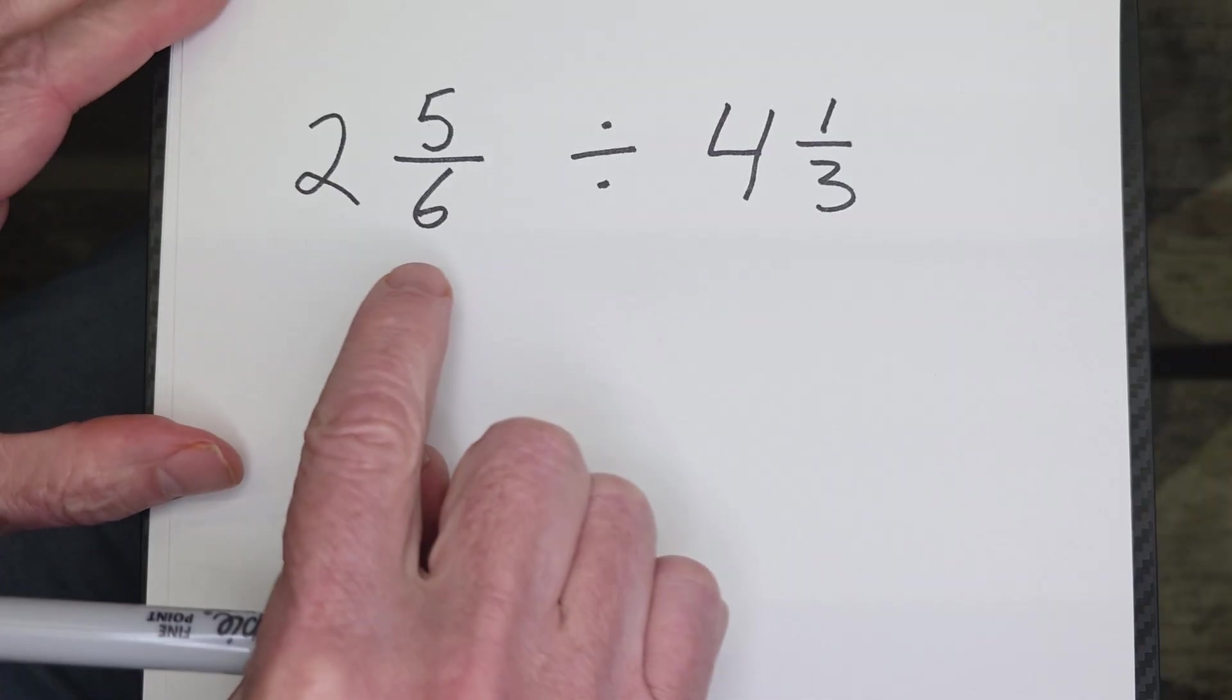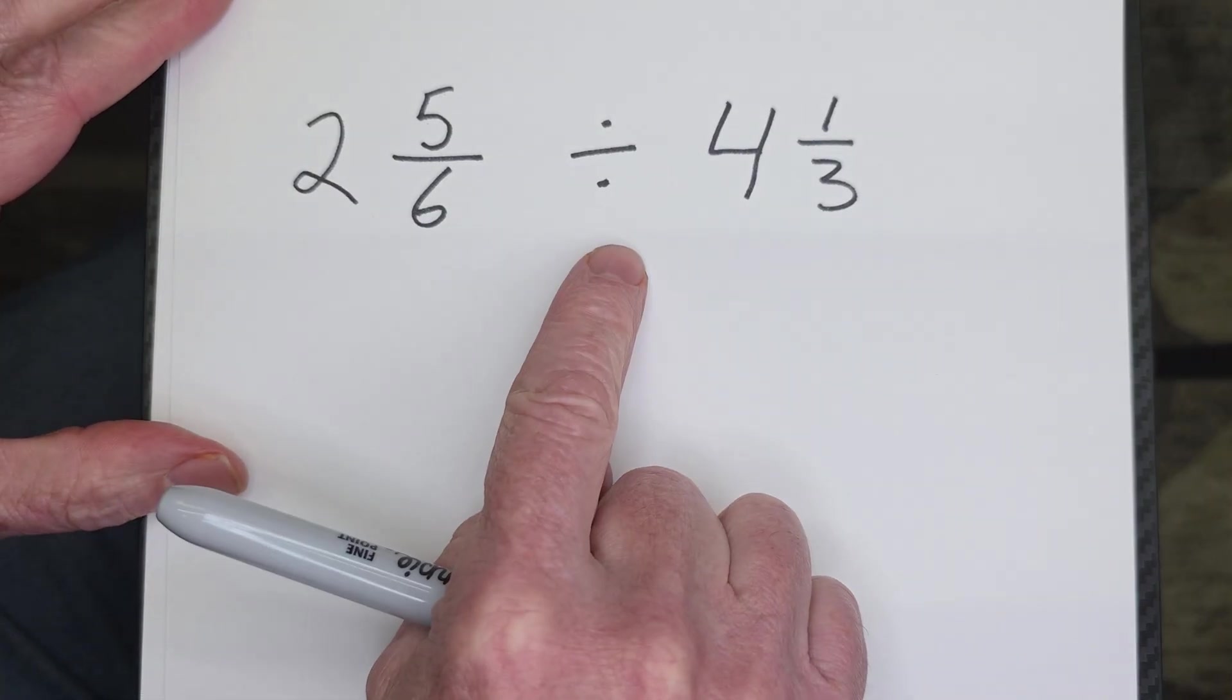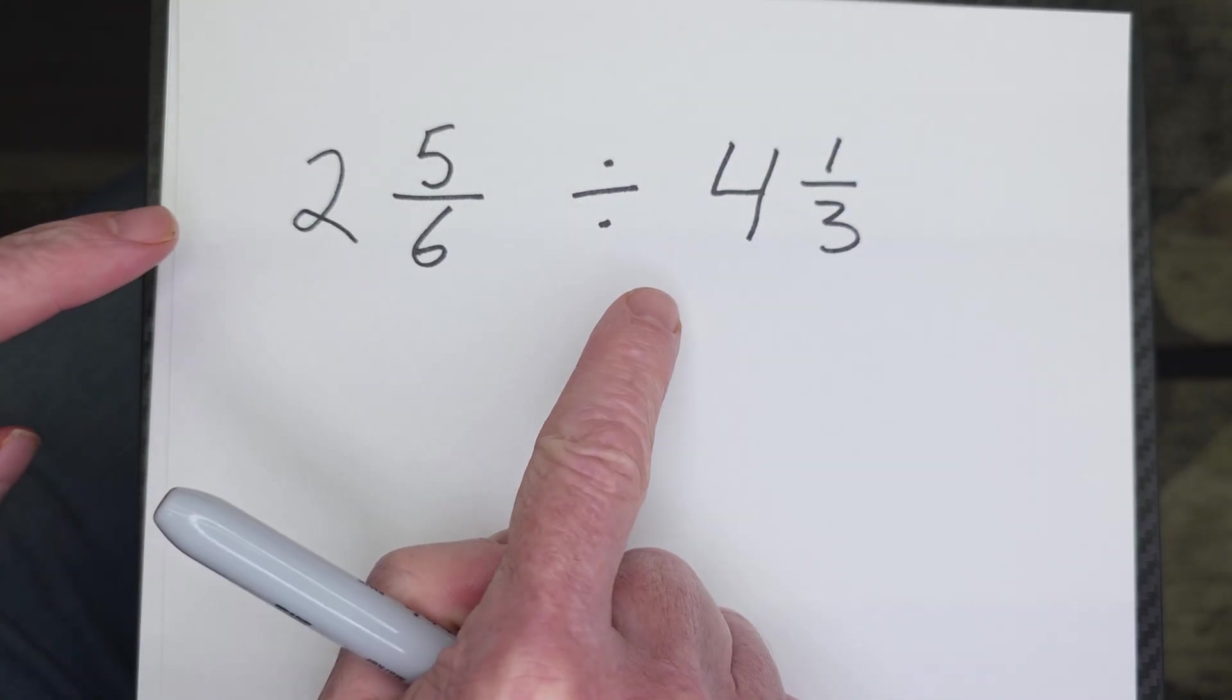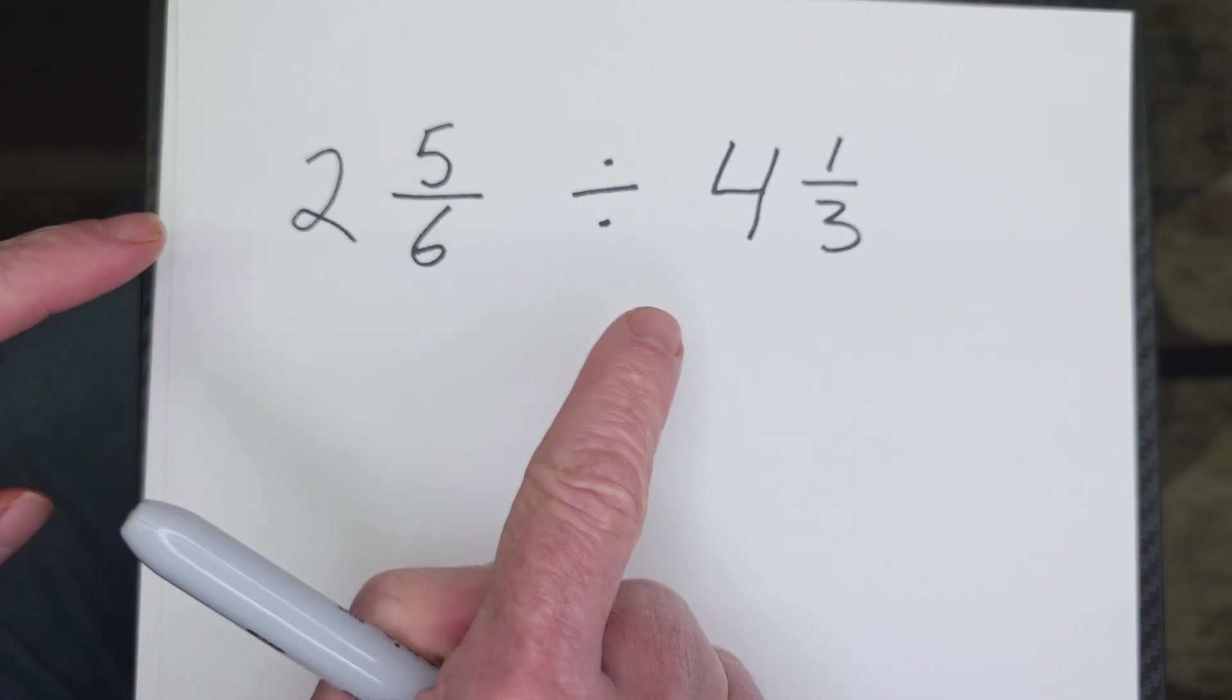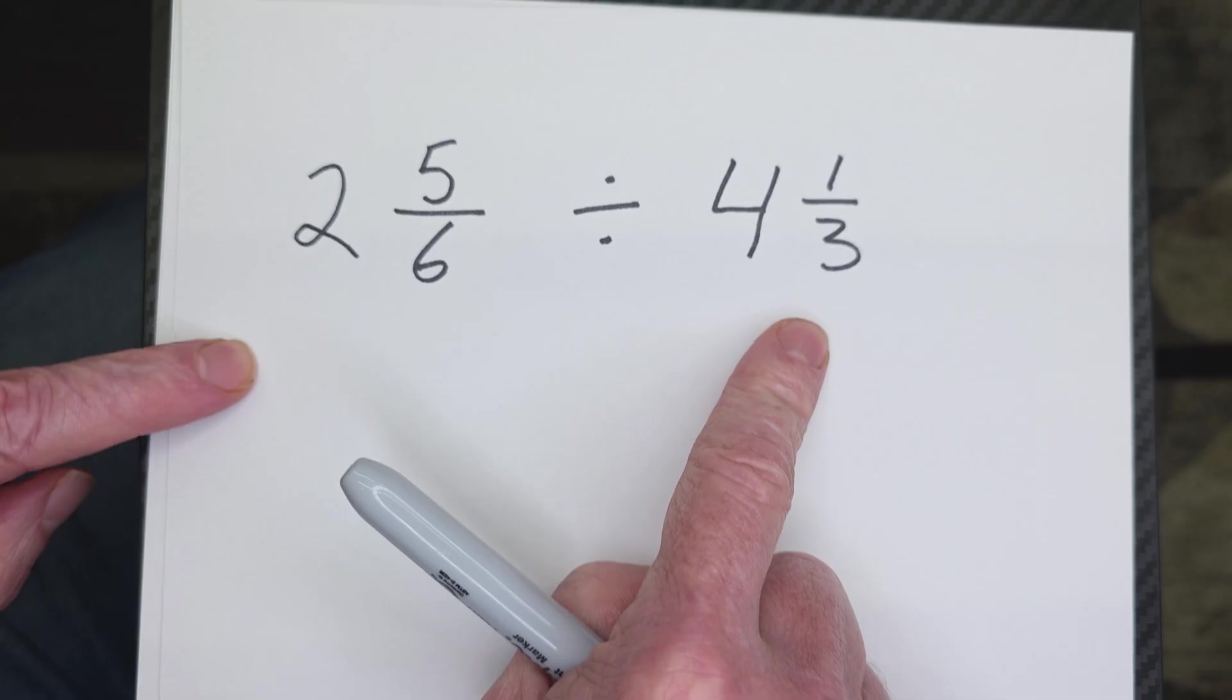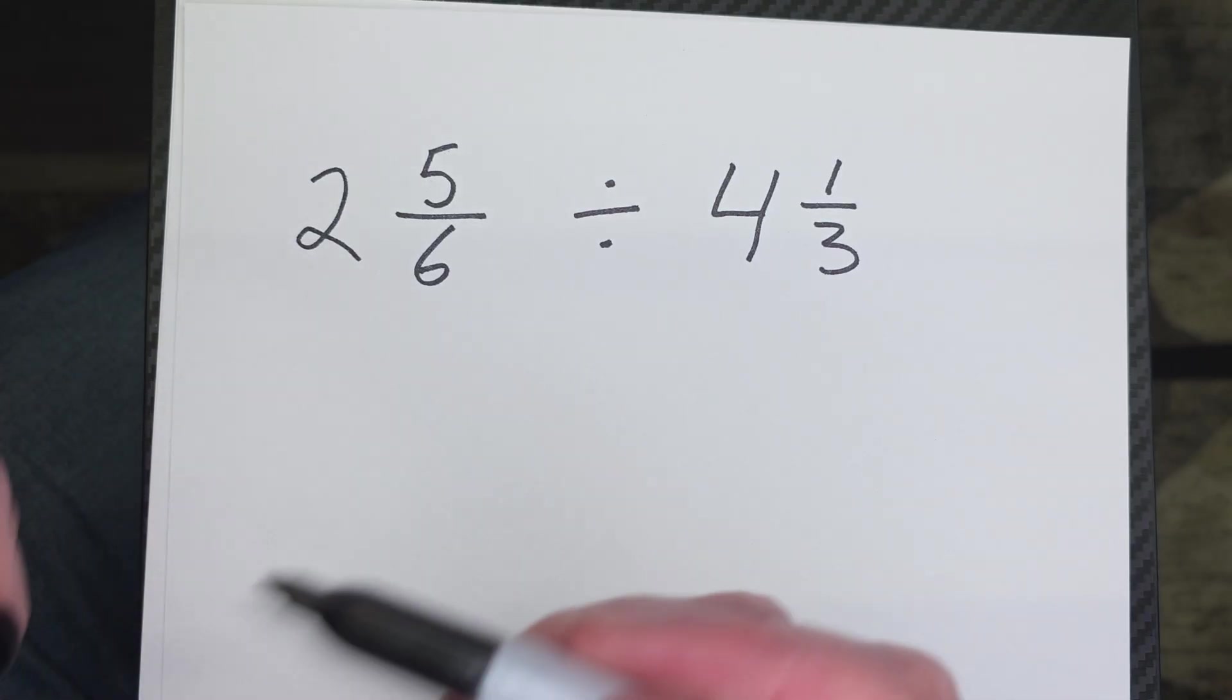All right, my math ninjas. We have 2 and 5/6 divided by 4 and a third. And this is really similar to when you multiply fractions and whole numbers. But we're going to end up switching this number over. I'm going to talk about that more in detail as we go.